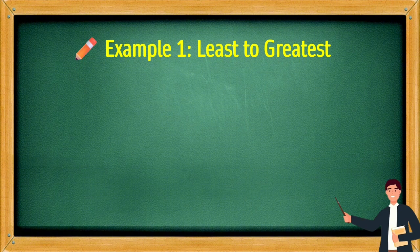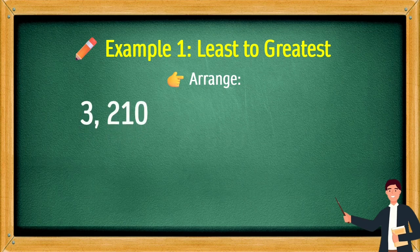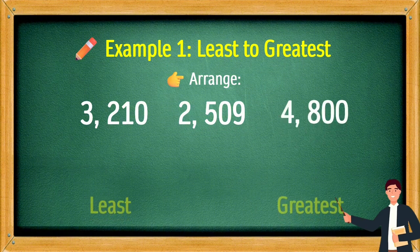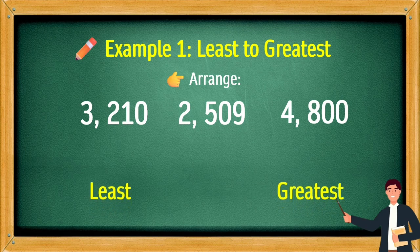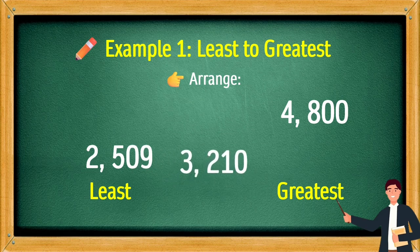Example 1: Least to greatest. Arrange 3,210, 2,509, and 4,800. From least to greatest: 2,509, then 3,210, and the greatest is 4,800.